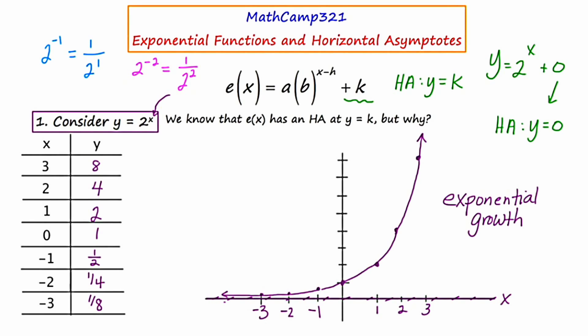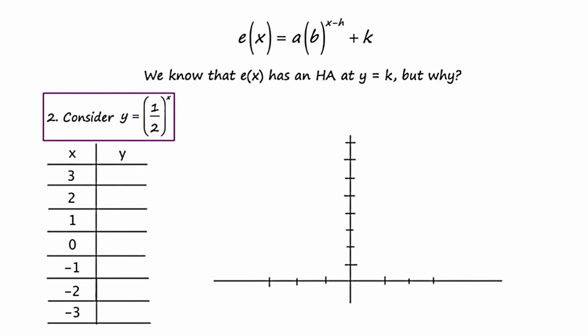Let's take a look at one more example. So now we're on slide two, and I'm giving you a new function to consider its HA. And this function is y equals one half to the x plus zero. So even though there's no number at the end, there is an implied plus zero, which means we're going to have an HA at y equals zero.